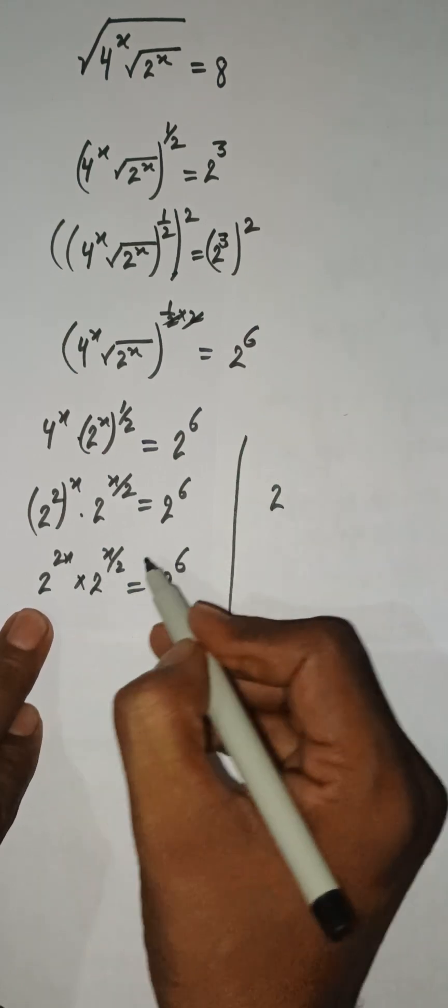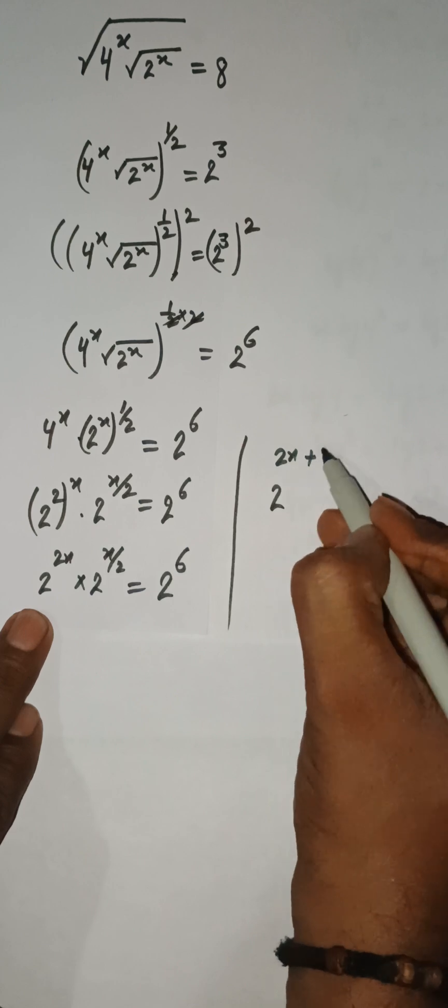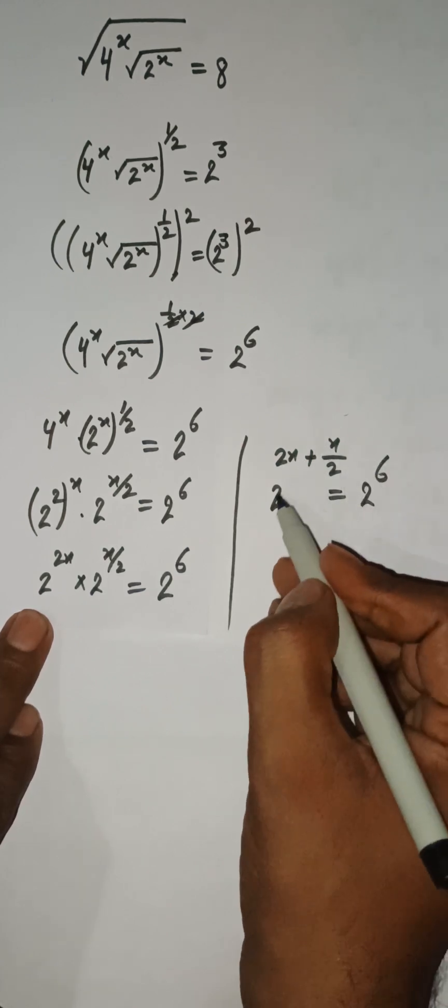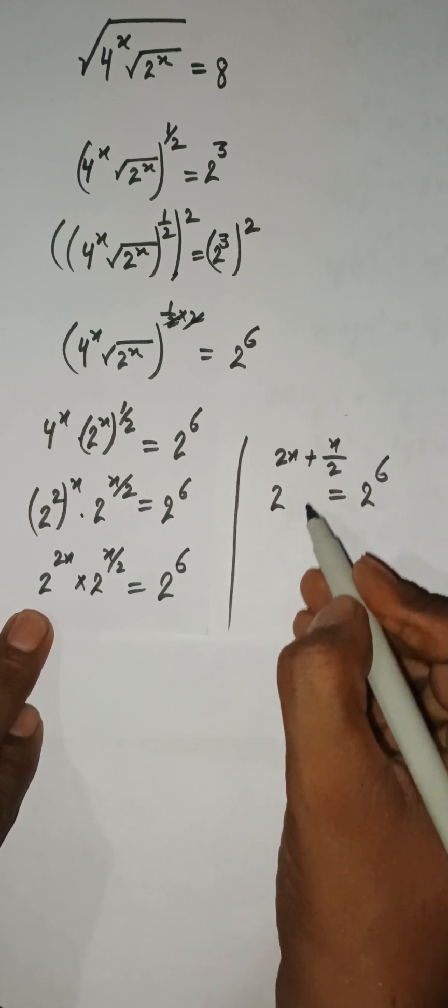Here 2 to the power 6. You can easily see that the bases are same, so we can just add their exponents. So 2 to the power 2x plus x by 2 equals 2 to the power 6.